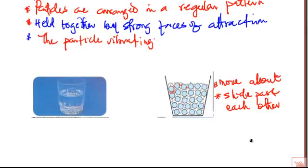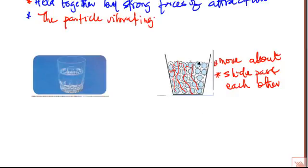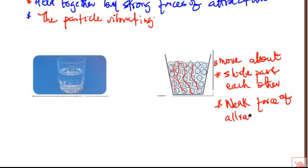Although liquid particles are still close together, they are not in a lattice because of the spaces between them — this is not a regular arrangement, so a liquid does not form a lattice. What about the force of attraction? Liquid particles also have a force of attraction holding them together, but that force is weak — a weak force of attraction. That's why water can pour easily, because the force of attraction is not as strong as that found in solid particles.